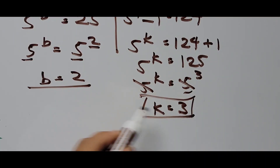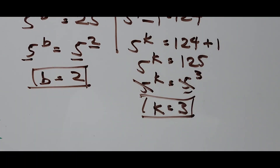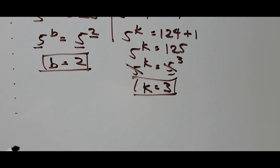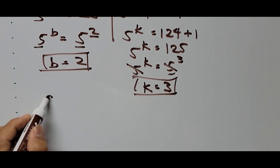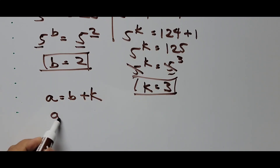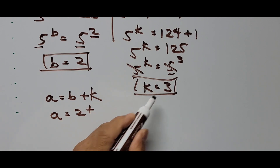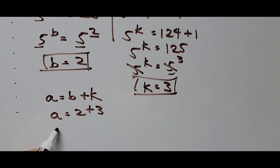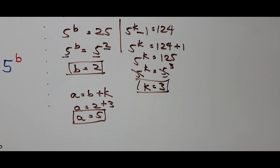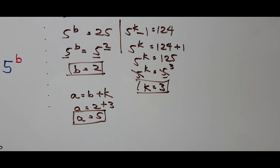We found the value of K equals 3 and B equals 2. From the earlier relationship, A equals B plus K. Therefore A equals 2 plus 3, so A equals 5. To confirm our answer, we need to check the values of A and B by substituting them into the original equation.